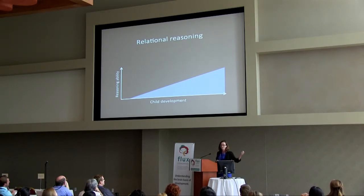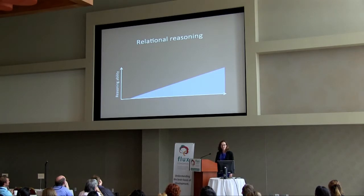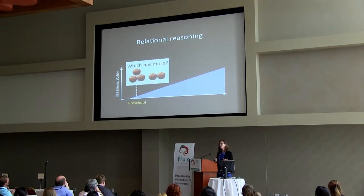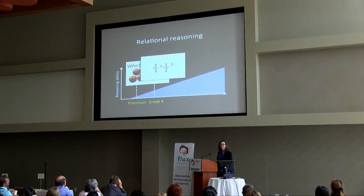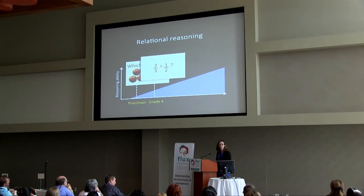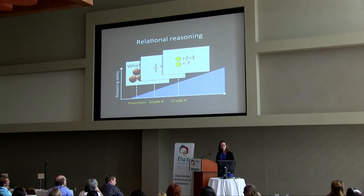If you think about reasoning ability developing over childhood and adolescence — and it does, it develops very late — we can think about it supporting the acquisition of skills we need in school. When you're first learning about numbers and trying to form a representation of the number line, you have to consider a comparison between two items. Later you might tackle fractions starting in grade four, but there are high schoolers who still don't really understand fractions very well. This would be a second-order relational problem. Then we get into pre-algebra and algebra.